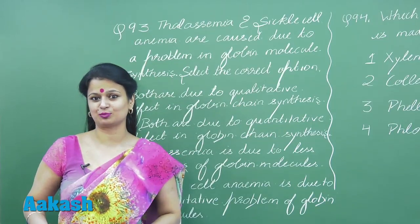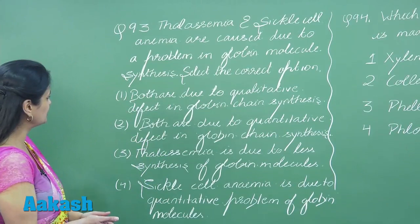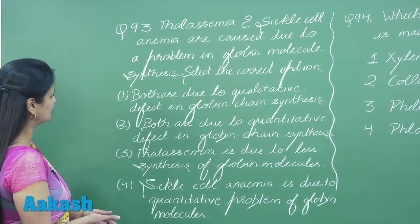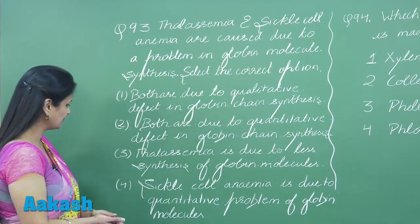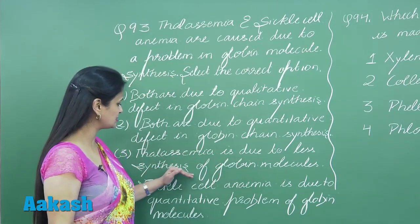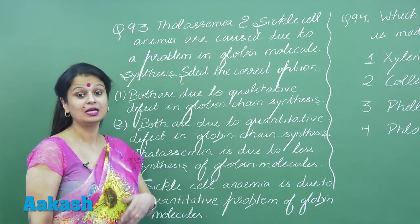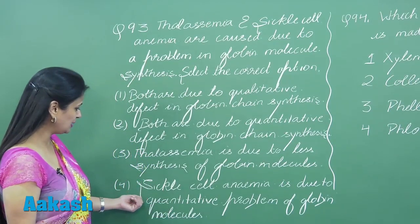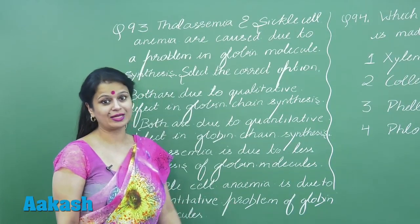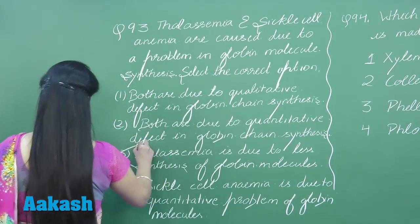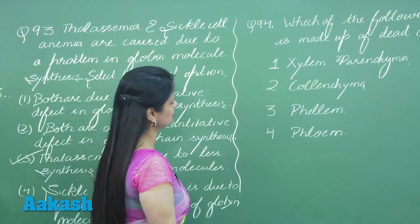So to be clear: sickle cell anemia is a qualitative problem, and thalassemia is a quantitative problem related to the number of chains. Looking at the options — option 1 says both are due to qualitative defect, which is wrong. Option 2 says both are due to quantitative defect, also wrong. Option 3 states thalassemia is due to less synthesis of globin — that's correct — and sickle cell anemia is due to a qualitative problem of globin, which is also correct. So the right answer is option 3.